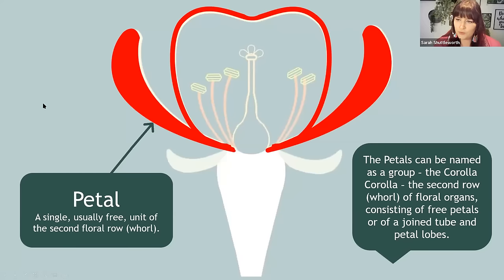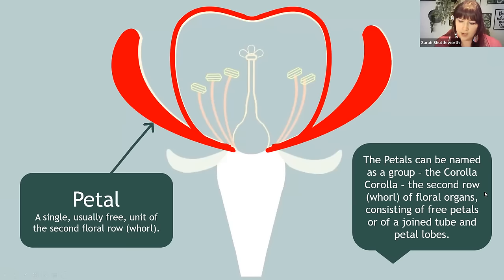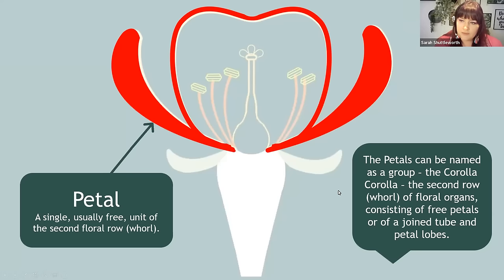Now we're moving into more familiar territory — petals. The description is a free unit of the second floral whorl, the one in from the sepals. There is also a collective term for all the petals: the corolla, still the second row of floral organs. Most of the time when they're free petals you'd refer to them as petals, but like sepals they can be fused or partly fused to create an altogether different looking structure — in which case you'd call it the corolla.